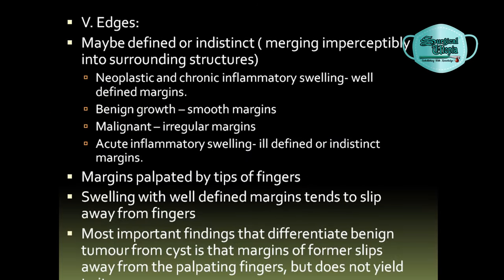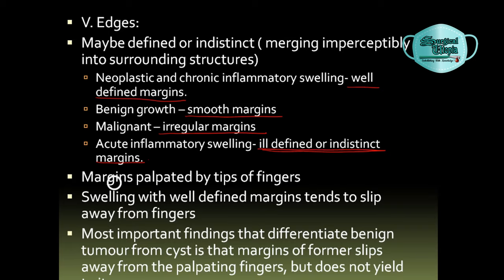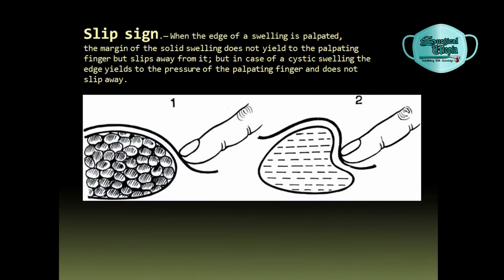Checking the edges of the swelling: a swelling may exhibit a well-defined edge or it may be indistinct from surrounding surfaces. In neoplastic and chronic inflammatory swellings, a well-defined margin is present. In benign growths, smooth margins are present. In malignancies, irregular margins are exhibited, and in acute inflammatory swellings, ill-defined or indistinct margins are present. Margins are palpated by the tip of the fingers. The most important finding differentiating a benign tumor from a cystic swelling is that the margins of the benign tumor will slip away from the palpating finger, but the cystic swelling will not yield to it.